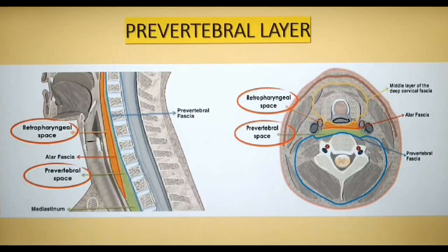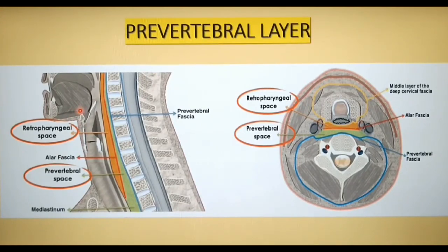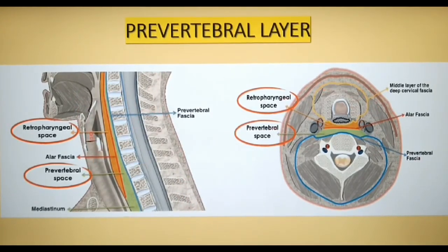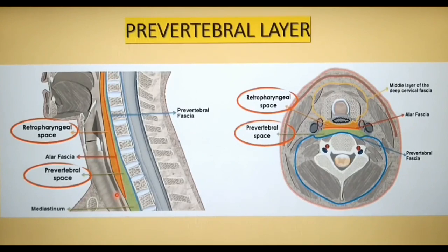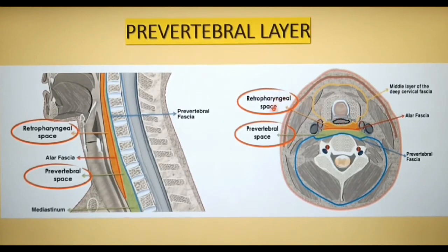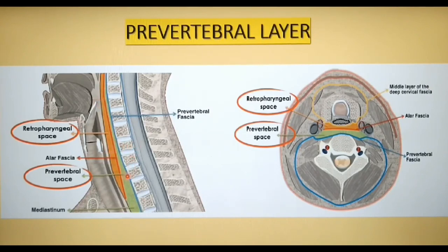Anteriorly, the prevertebral fascia is separated from the pharynx and buccopharyngeal fascia by the retropharyngeal space, containing loose areolar tissue. In the cross-sectional view, the prevertebral fascia is in blue and the orange color shows the retropharyngeal space. Anterior to the retropharyngeal space is the buccopharyngeal fascia. This space differentiates and separates the buccopharyngeal fascia from the prevertebral fascia.